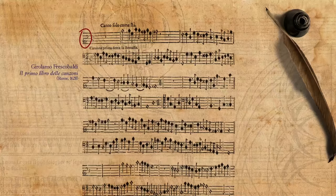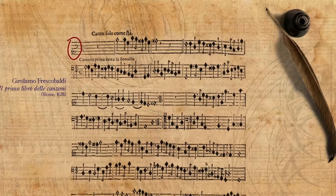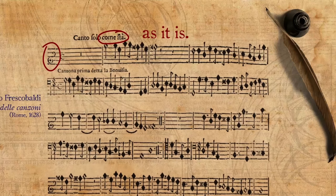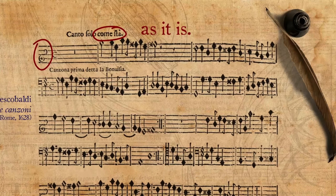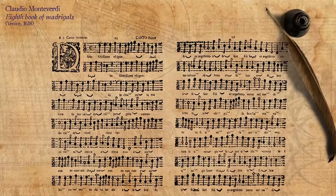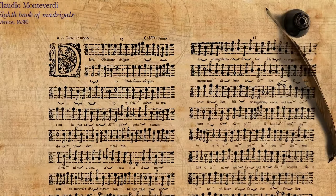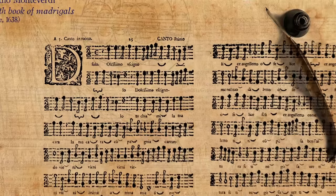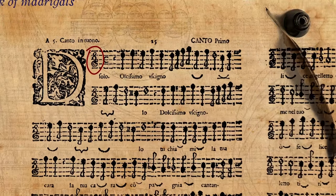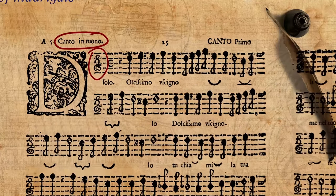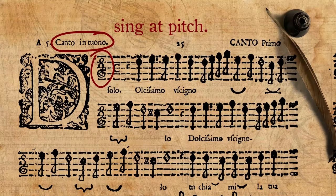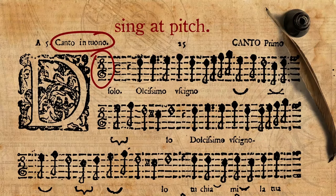The remark 'come sta' is used to prevent the player from automatically transposing. Monteverdi, who enlarged the overall vocal compass and often asked for rather high notes, wrote next to a part in a G2 clef — again, a high clef — 'canto in tuono,' meaning 'sing at pitch.' This is to make sure that this exceptional case will not be transposed.